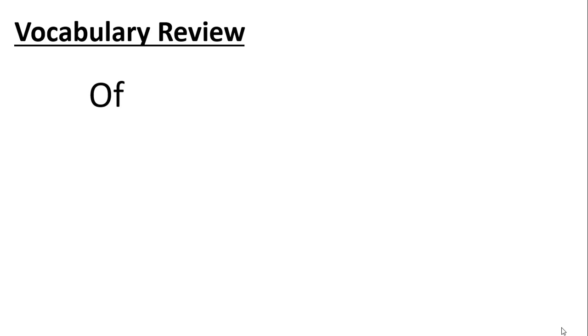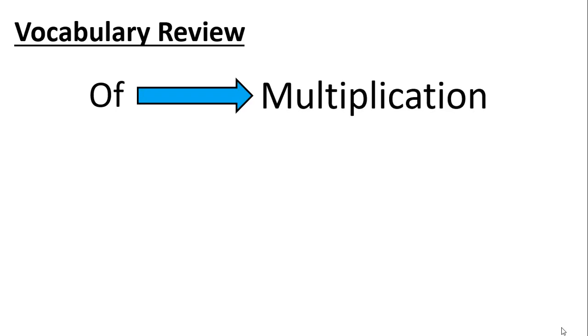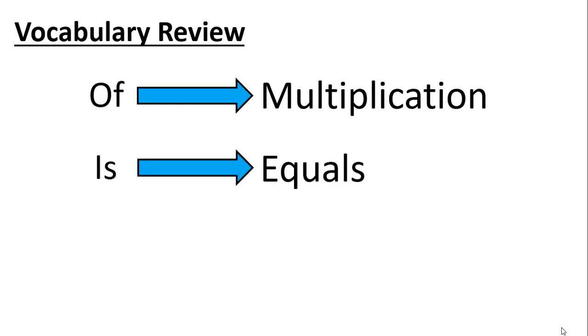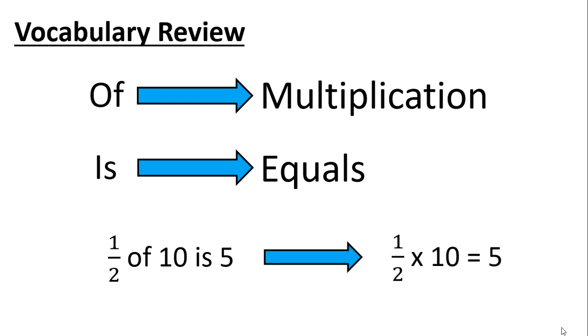Let's start with a review of vocabulary. We'll be reviewing two words. The first word is the word 'of.' In math, 'of' means that we'll be multiplying. The other word is 'is.' When we're referring to 'is' in math, we're referring to what something is equal to. An example of this might be: 1 half of 10 is 5. We can rewrite this as 1 half times 10 equals 5.